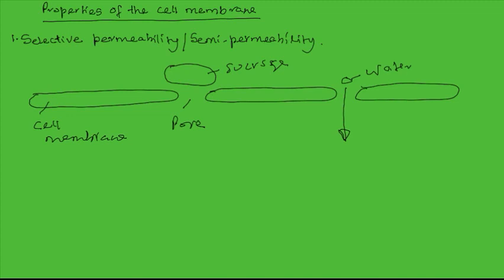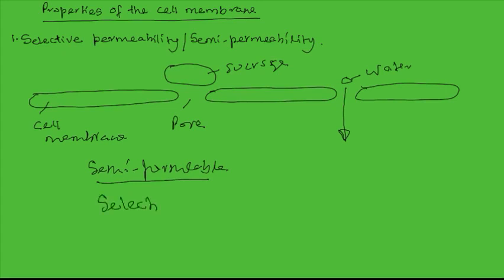The membrane is therefore said to be semi-permeable. This property allows the membrane to select what enters and what leaves the cell, so the cell membrane is said to be selectively permeable, due to the presence of pores that determine what size of particles will pass through and those that will not be allowed to pass either into or out of the cell.